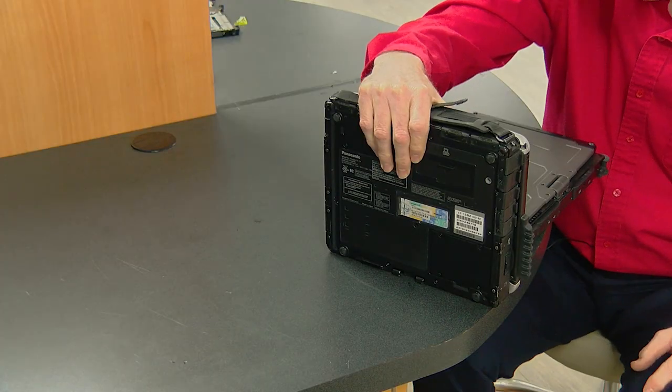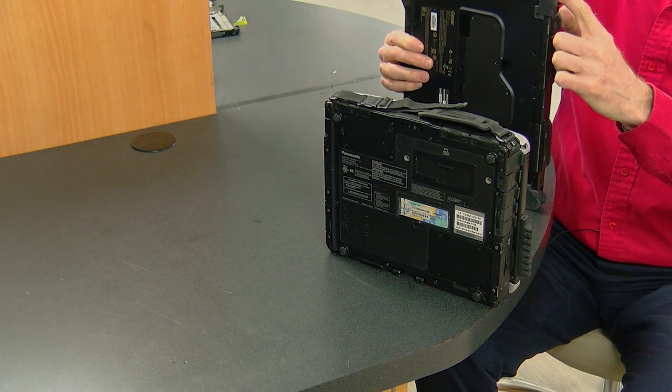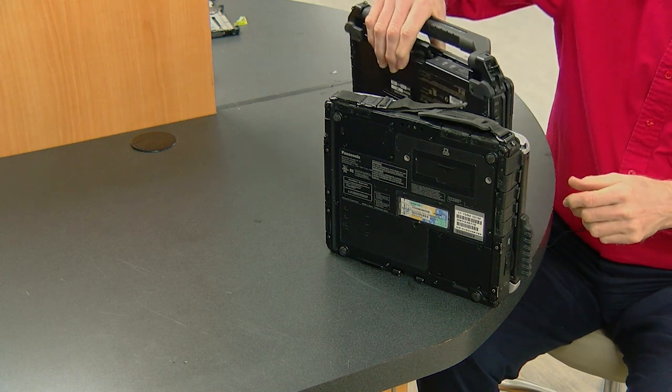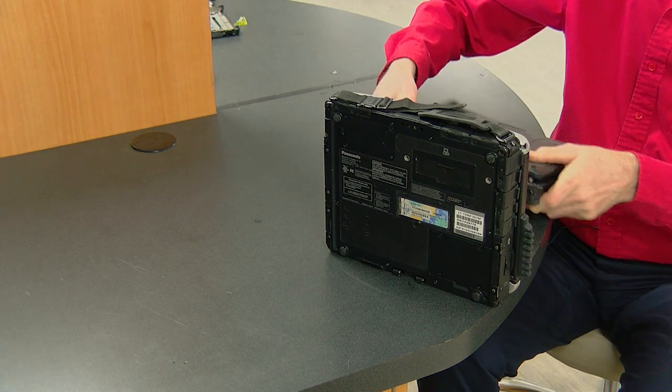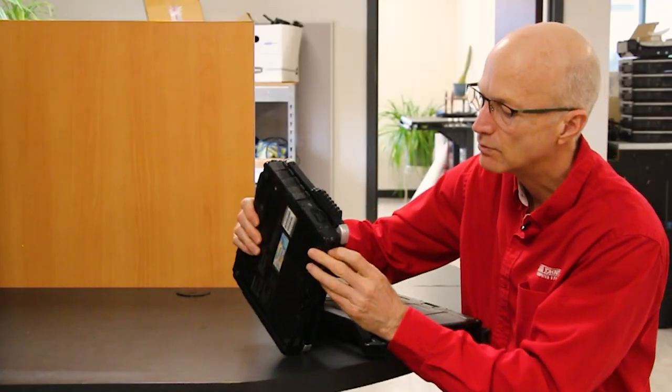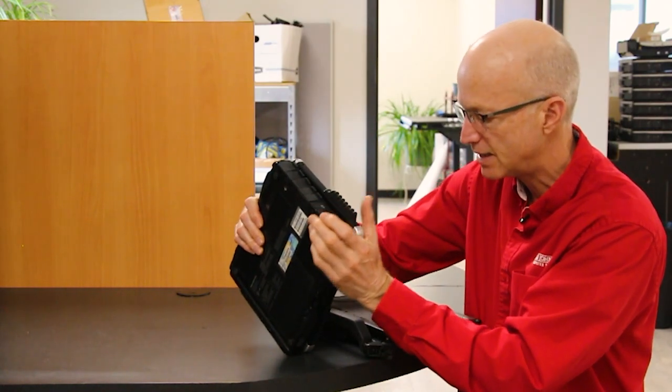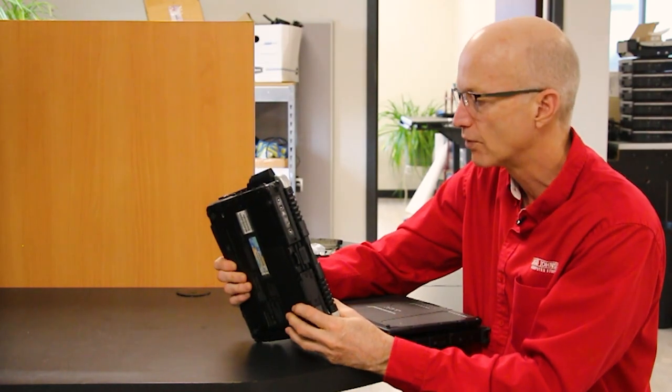One thing I like about the G-TAC is it has these rubber bumpers. I don't know what it is about the rubber bumpers. It makes it feel so much more rugged. And when I drop it, it's bouncing on those rubber bumpers. Panasonic is just straight-up magnesium alloy casing, no rubber bumpers, no frills on this unit.